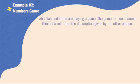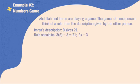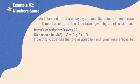Abdullah and Imran are playing a game. The game lets one person think of the rule from the description given by the other person. Let's say Imran's description is 8 gives 21. One of the correct rules will be 3X minus 3, since 3 times 8 minus 3 is equal to 21. From this scenario, you can see that 8 is assigned to X and the word gives means equal to or results to. You may think of the rule as the mathematical model that is formed from the description.